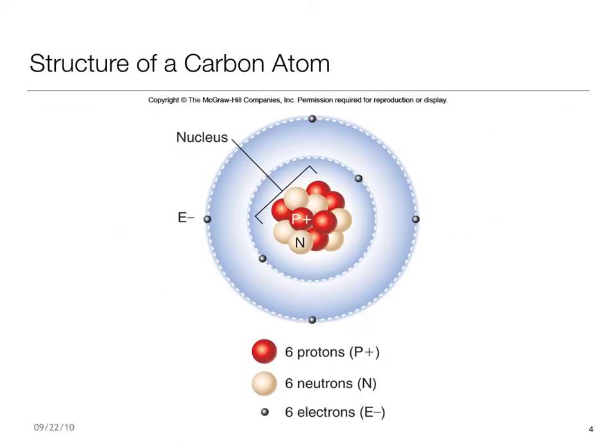Just four elements — oxygen, carbon, hydrogen, and nitrogen, symbolized as O, C, H, and N — make up more than 96% of the mass of most living organisms. This model represents a carbon-12 atom containing six protons and six neutrons in its nucleus, as well as six electrons orbiting its outer shells.